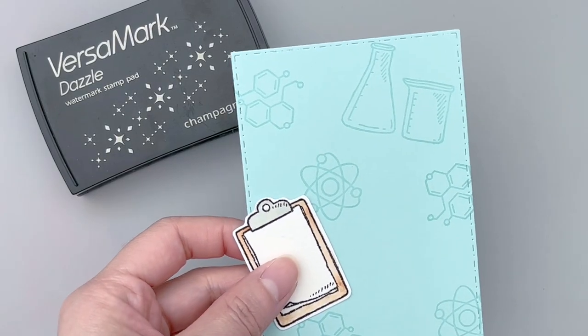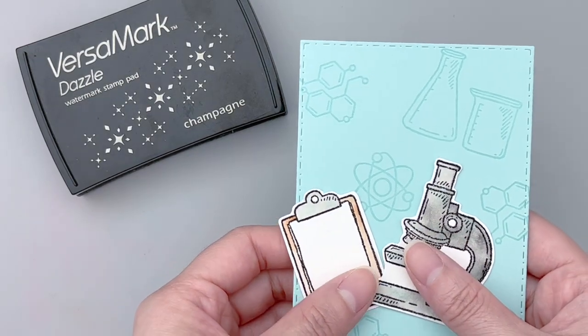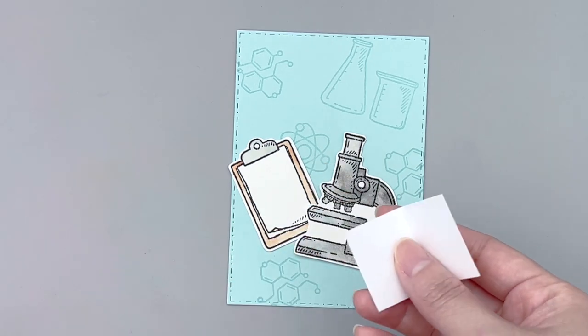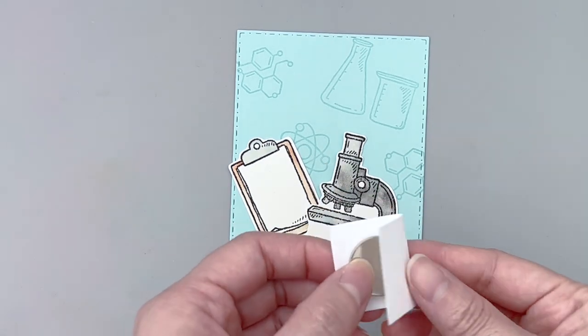For the front of the card, I stamped some images in the background using Versamark ink pad. And now we are ready to make our second interactive mechanism which is the light-up portion.